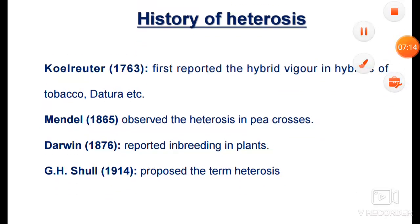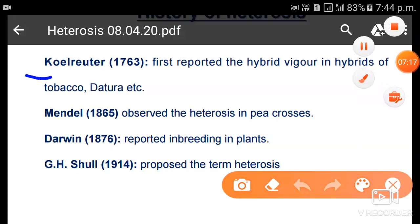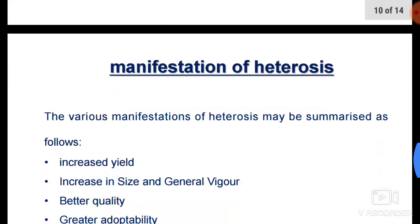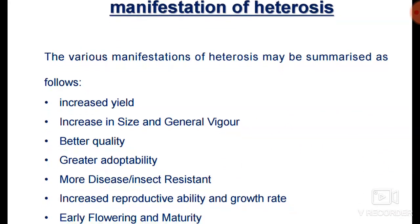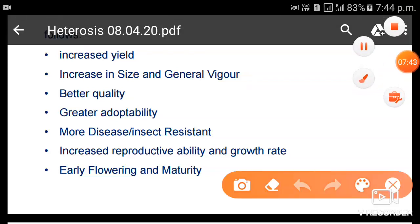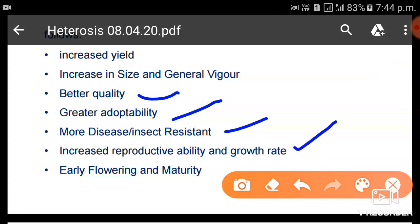Regarding the history of heterosis: Kolreuter first reported hybrid vigor in tobacco and Datura. Mendel in 1865 observed heterozygosity in pea crosses. Darwin reported inbreeding in plants, and G.H. Hull in 1913 proposed the term heterozygosis. The various manifestations of heterosis include: increase in yield, increase in size, general vigor, better quality, greater adaptability, more disease resistance, increased reproductive ability, growth rate, and early flowering and maturity.